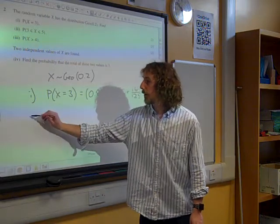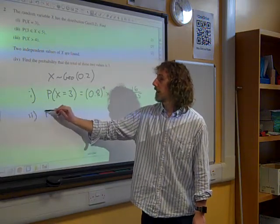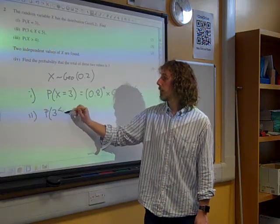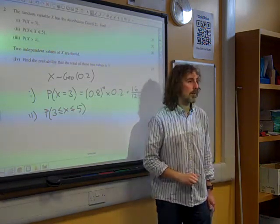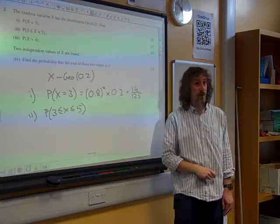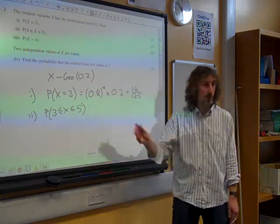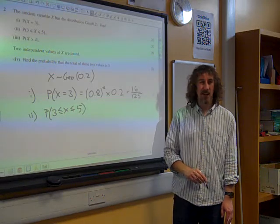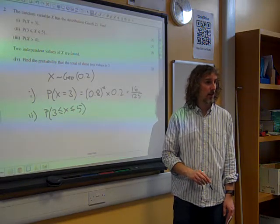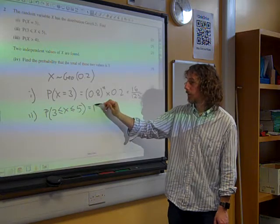Or we could give our answer to 3 significant figures. What's the probability of X being between 3 and 5? Well, actually, for this one, this is not binomial where we could have used the tables and subtracted. This is probably the easiest way, to work out the three individual probabilities.